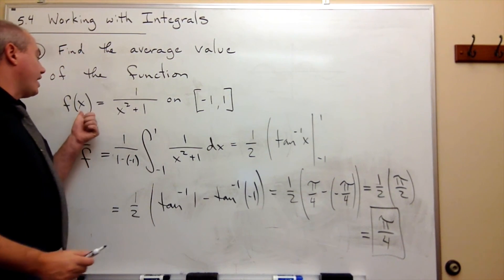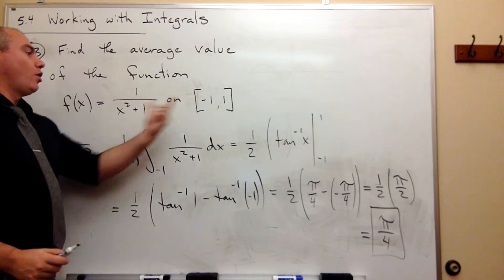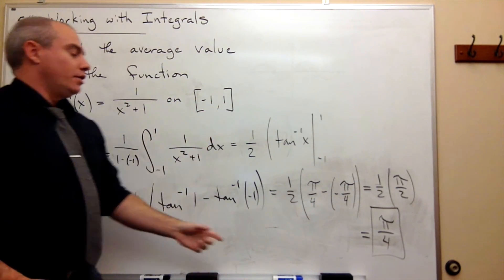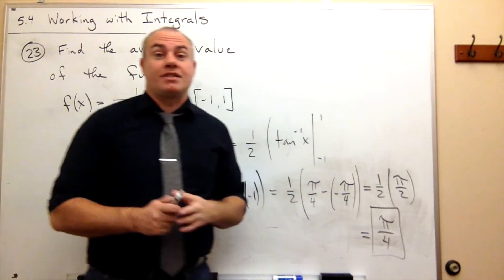And so the average value of this function over this interval is pi over 4. That's the average.